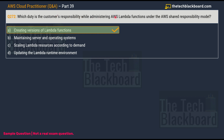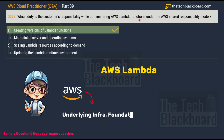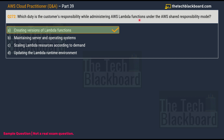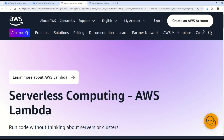The correct answer is option A: creating versions of Lambda functions. When customers use AWS Lambda, AWS manages the underlying infrastructure, foundation services, operating system, and application platform. Customers are responsible for the security of their code, storage and accessibility of sensitive data, and Identity and Access Management (IAM) to the Lambda service. Customers are also responsible for creating versions, deploying code, and setting environment variables.